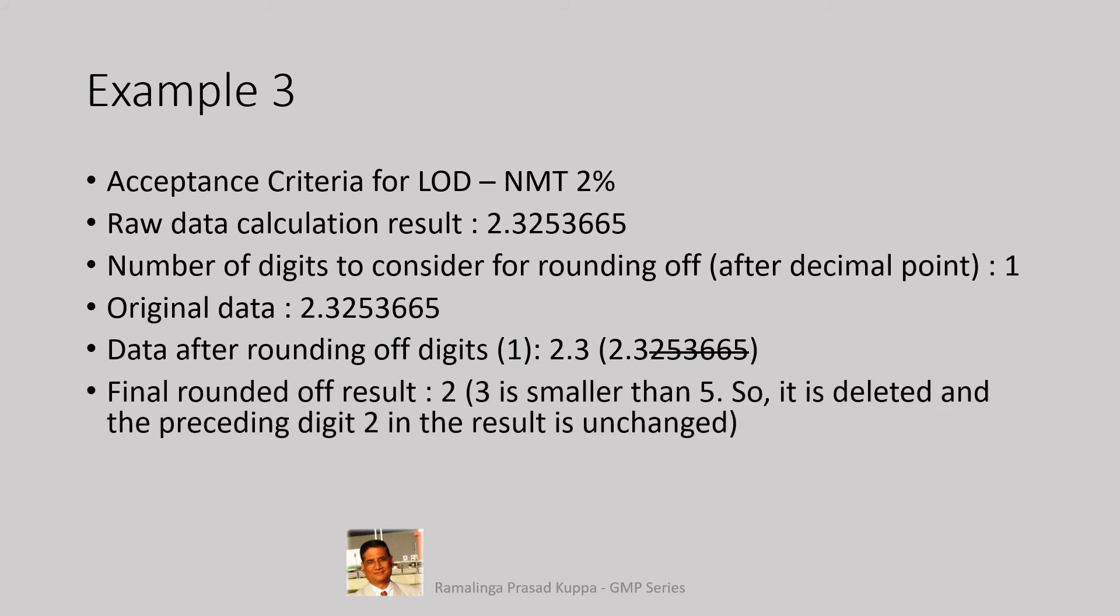Final rounded off result is 2. 3 is smaller than 5, so it is deleted and the preceding digit 2 in the result is unchanged. Final reported result is 2% for LOD. Decision is passed. The result is passed for LOD test.